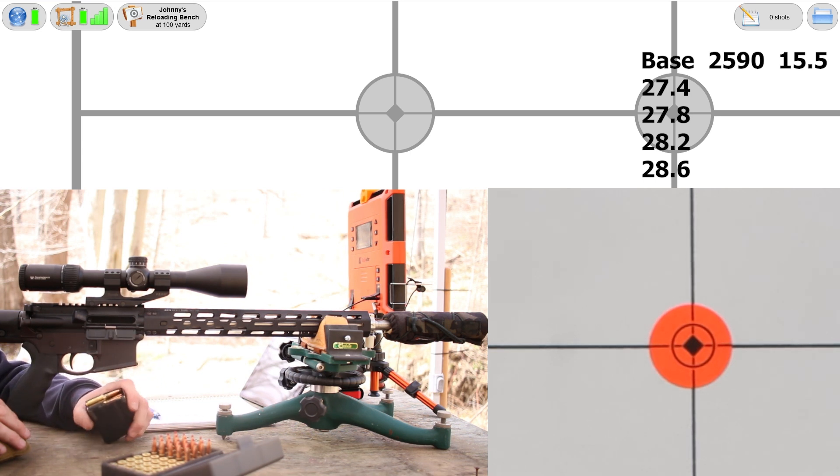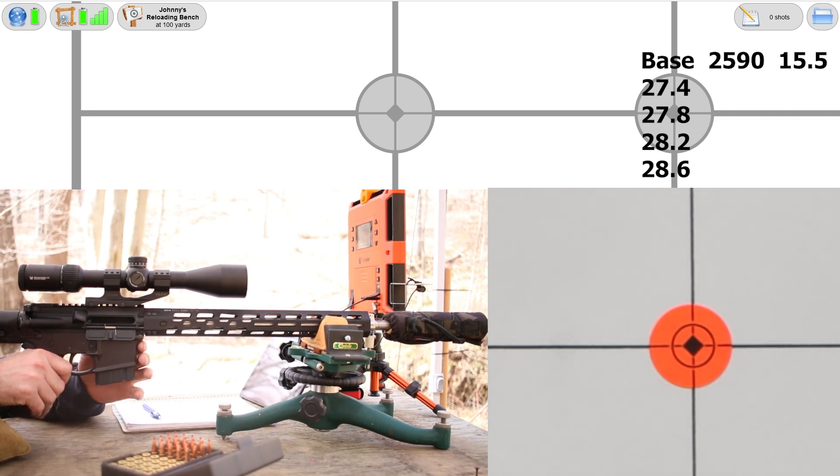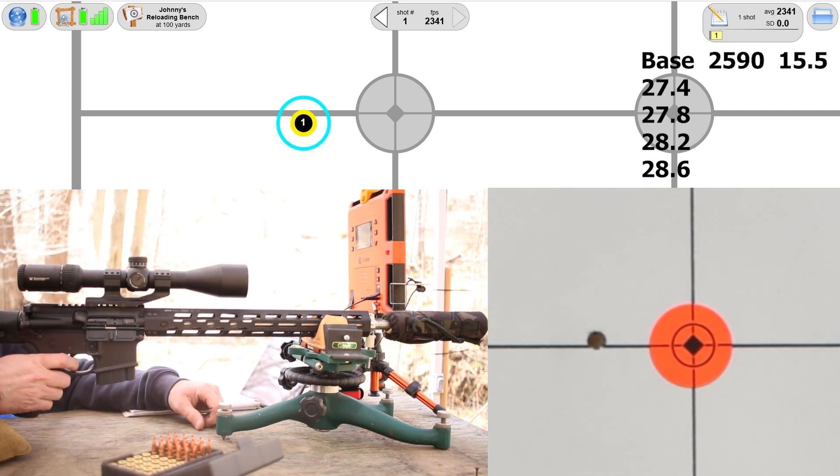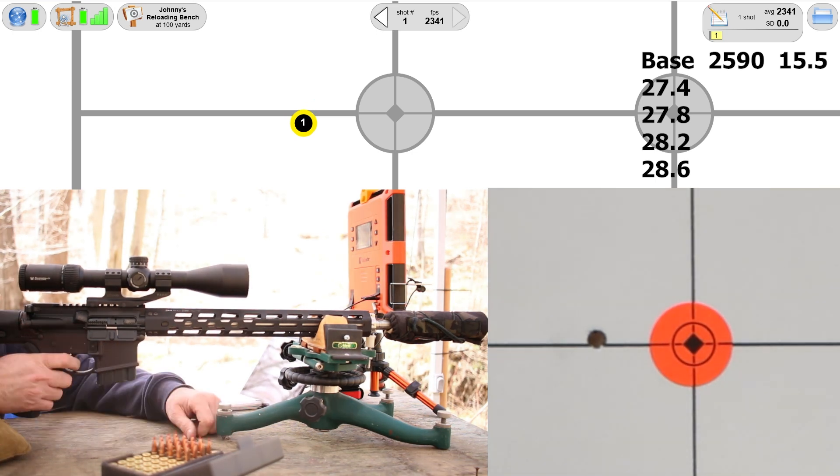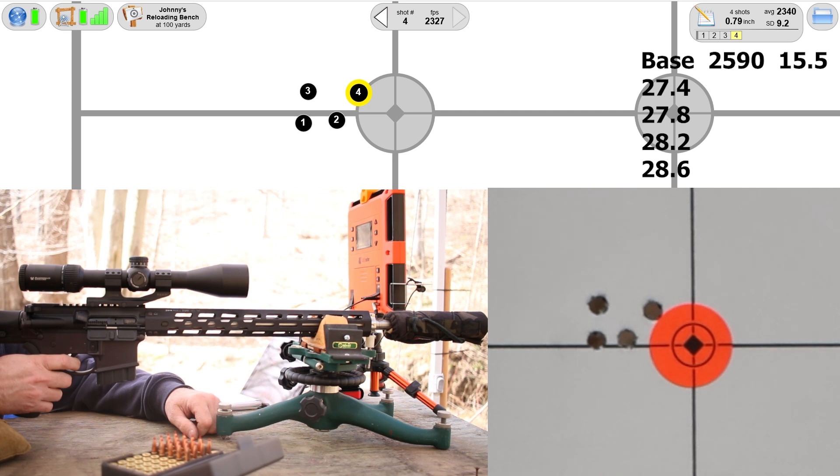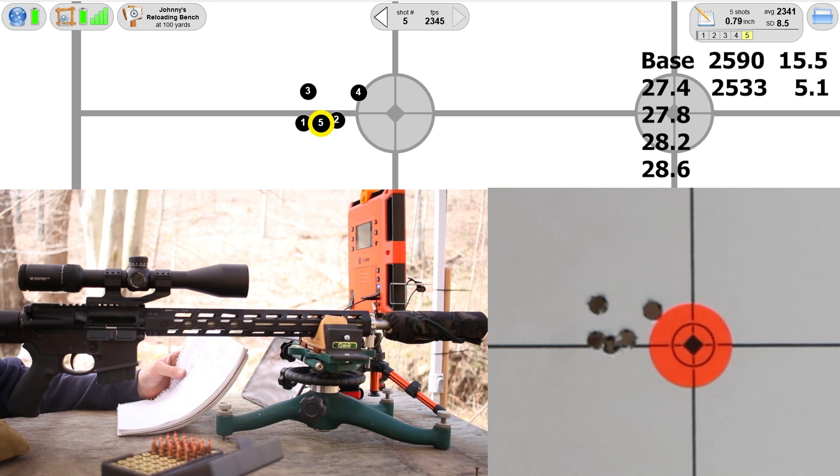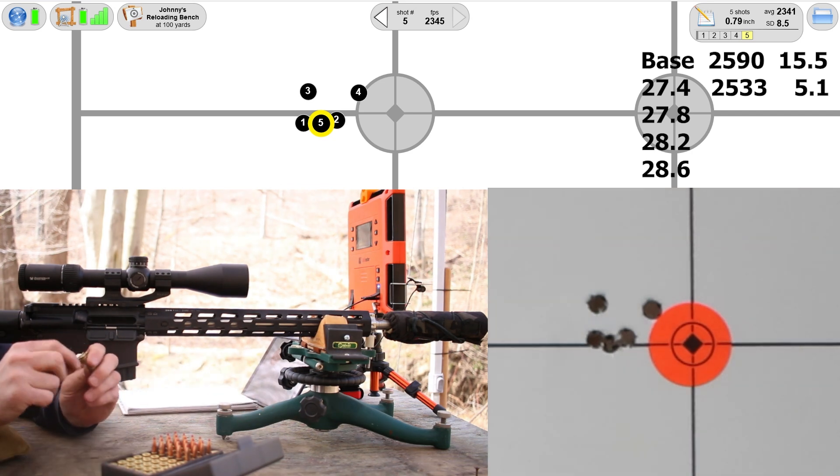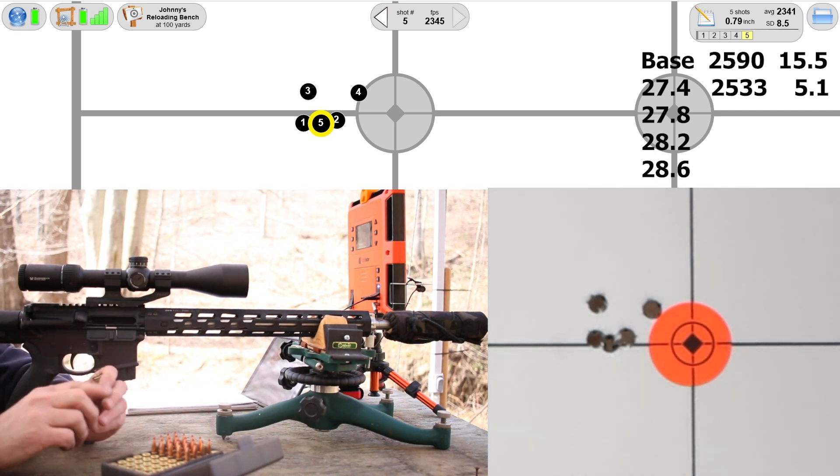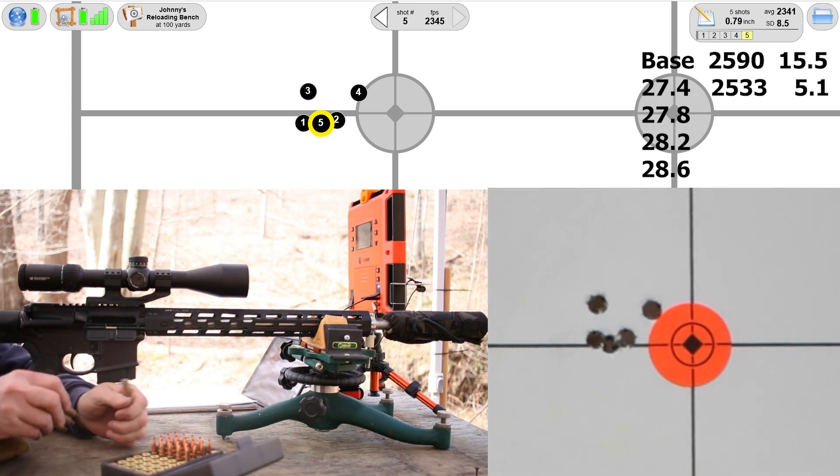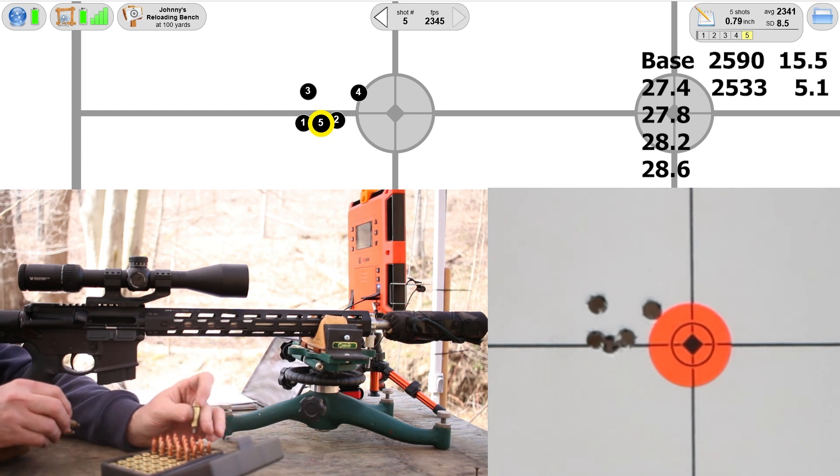Our first group with Reloader 15.5 is 27.4 grains. First piece of brass looks really good. We're 0.79 inches, velocity 2533, standard deviation 5.1. We got a ways to go with velocity but remember we're shooting four-tenths of grain increments, so we might see a pretty significant difference. I did get a couple spicy marks here on the brass and a little bit of a burr on one of them. Everything else seems fine - I think this is maybe just a mistuned gas system. If it gets a whole lot worse we might be in trouble.